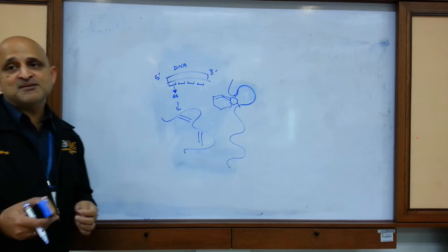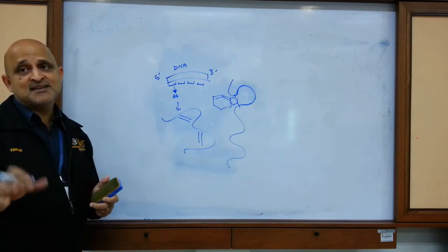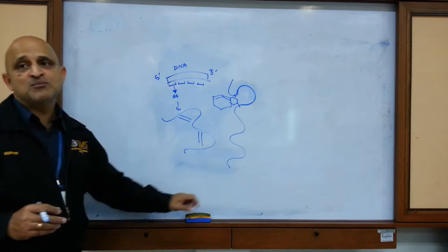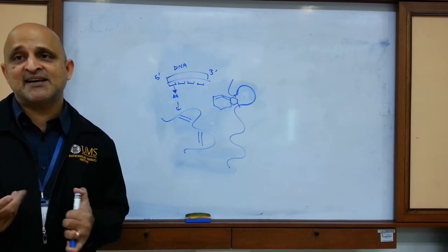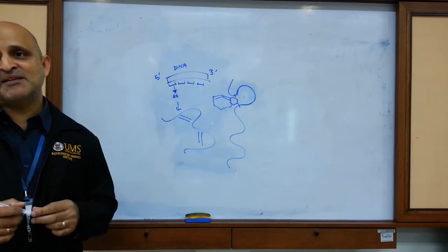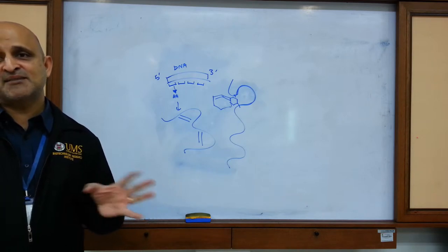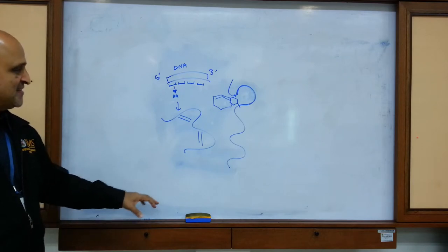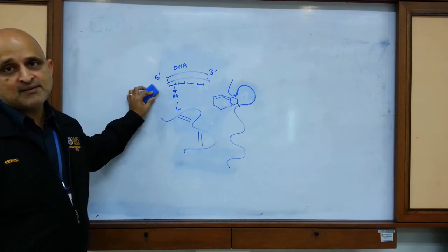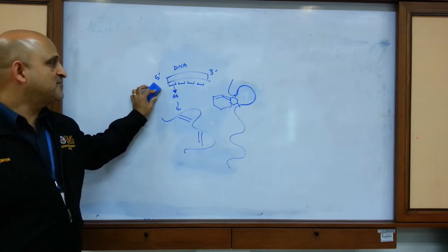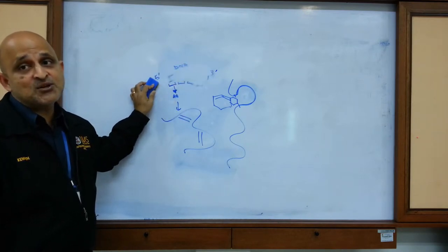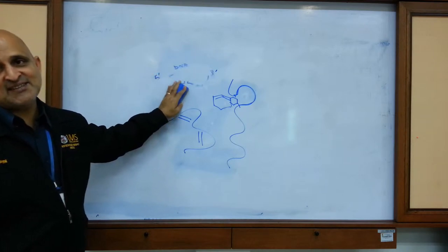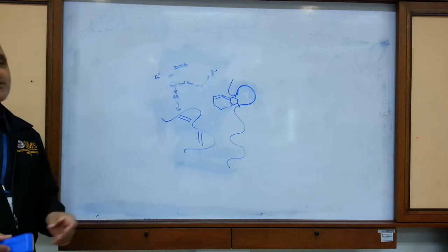When you design an experiment to express genes from one system in another, you need to take certain things into consideration. A human gene encoding a specific enzyme may not be expressed correctly in bacteria. When you shuttle a gene from a eukaryote into a prokaryote, it will not express readily. One reason is the presence of introns. A eukaryotic gene contains introns and exons, but the bacterial system cannot splice these out, so the gene will not be transcribed and you will not have translation into the protein.